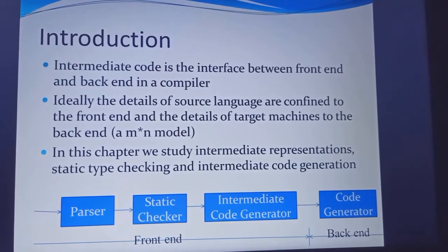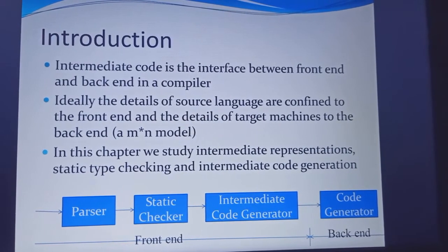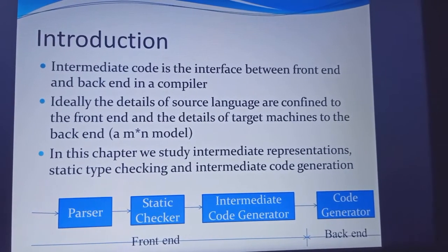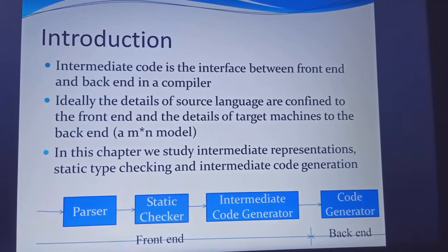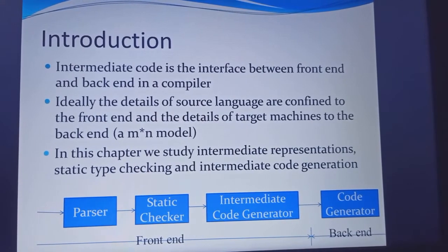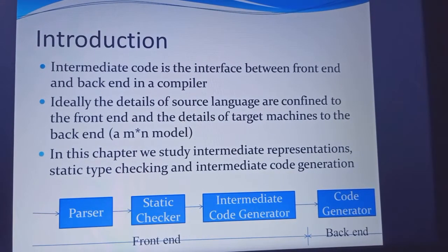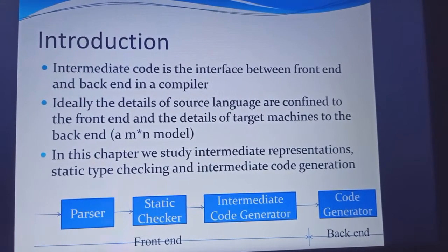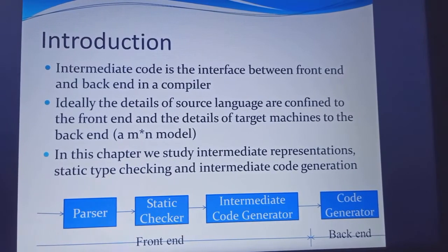In the intermediate code phase, we generate a 3-address code. The forms of 3-address code include quadruples, triples, and indirect triples. The back end of a compiler covers the next phases — code optimization and code generation.